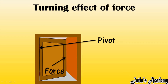Turning effect of force — what do you mean by turning effect of force? When any object is fixed on some point, for example we are having this door. This door is fixed at some point, and this fixed point is nothing but a pivot, or you can say a pivoted point.